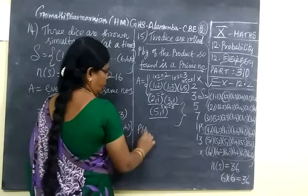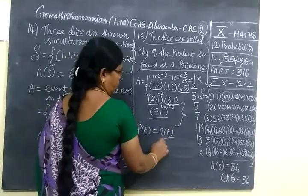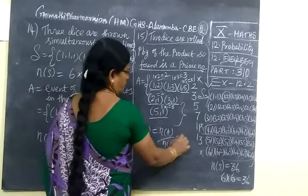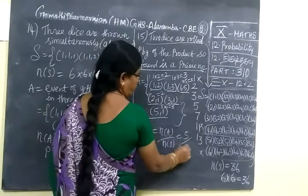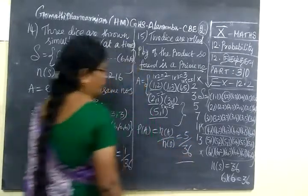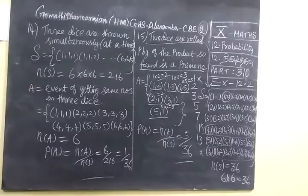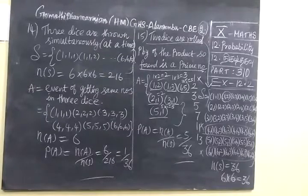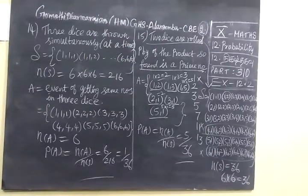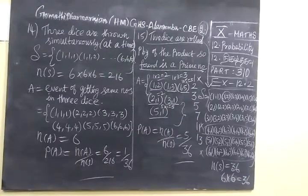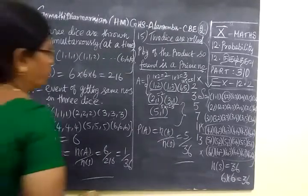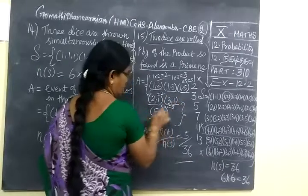Therefore P(A)=n(A)/n(S)=5/36 totally. You check the answer for the 15th one. 15th one answer is 6/36. One more number: 1,2; 2,1; 1,3; 3,1; 1,5; 5,1. So 6 numbers.